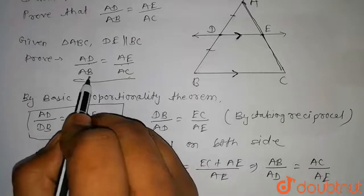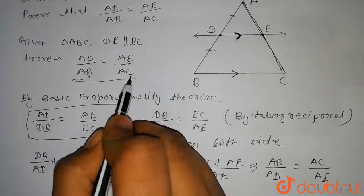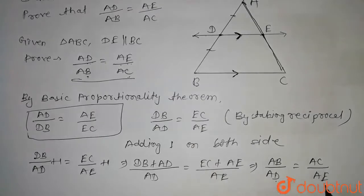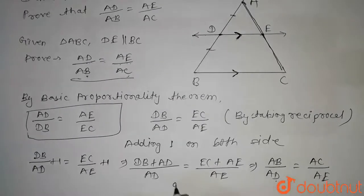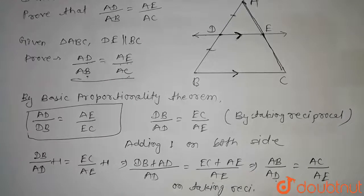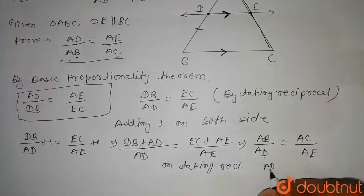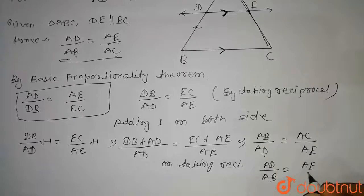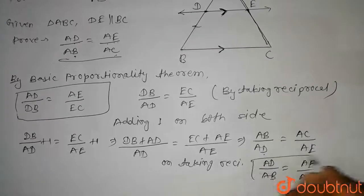And in this question, we have to prove AD divided by AB equal to AE divided by AC. And we have AB divided by AD equal to AC divided by AE. So on taking reciprocal, on taking reciprocal, we can write AD divided by AB equal to AE divided by AC. Hence, this is proved.